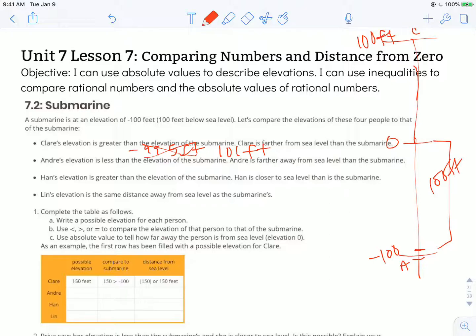So Claire's up here, Andre's down here at negative 101 feet. Let's check to make sure that satisfies the next part of his statement. Andre is further away from sea level than the submarine. Yeah, Andre is 101 feet away from sea level, so that's satisfied with negative 101 feet.